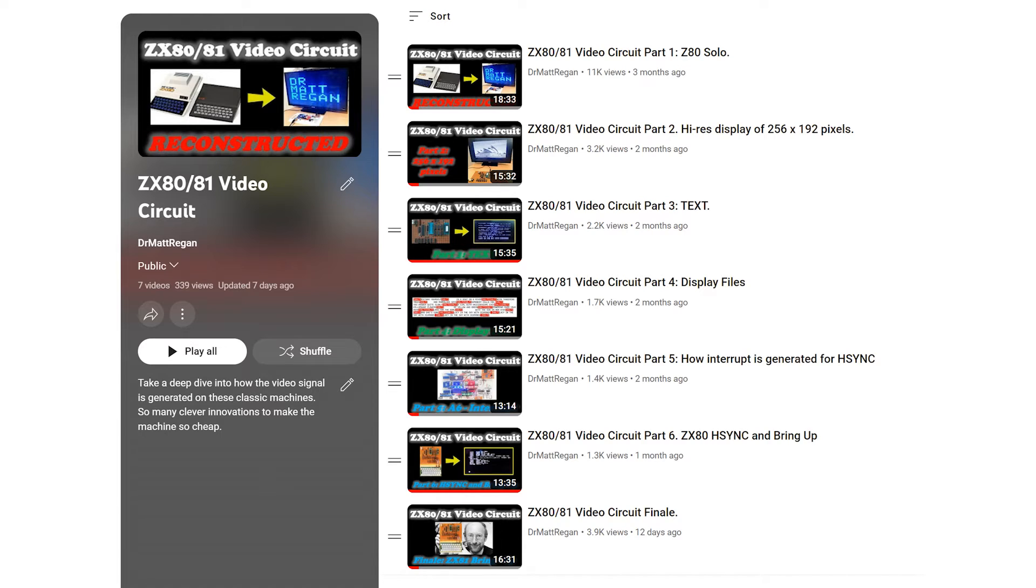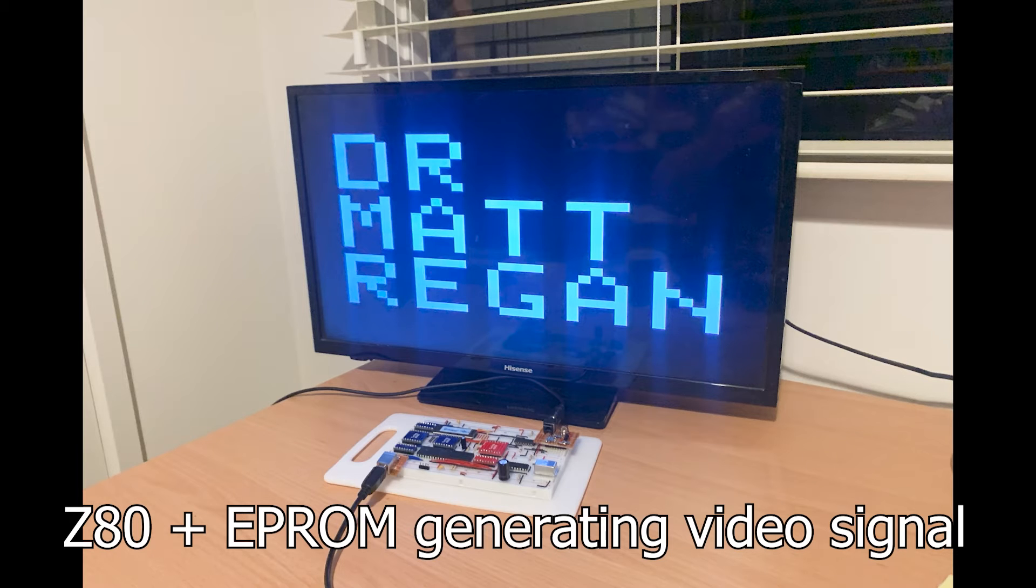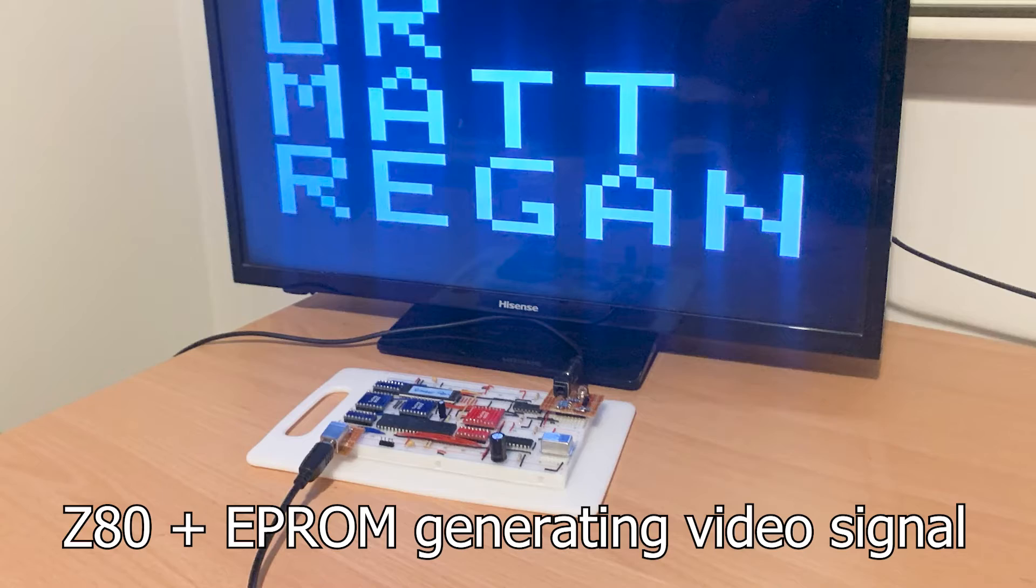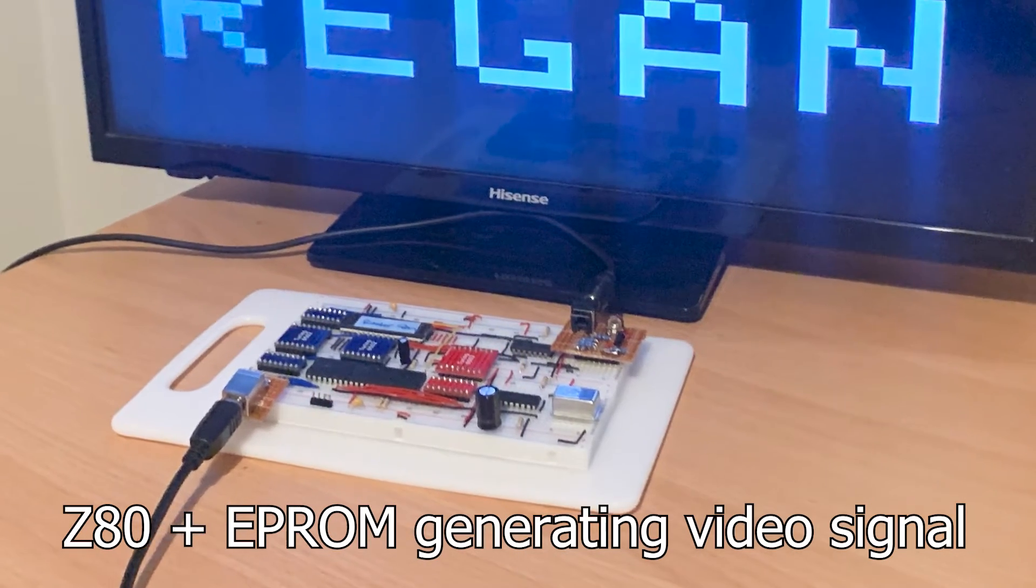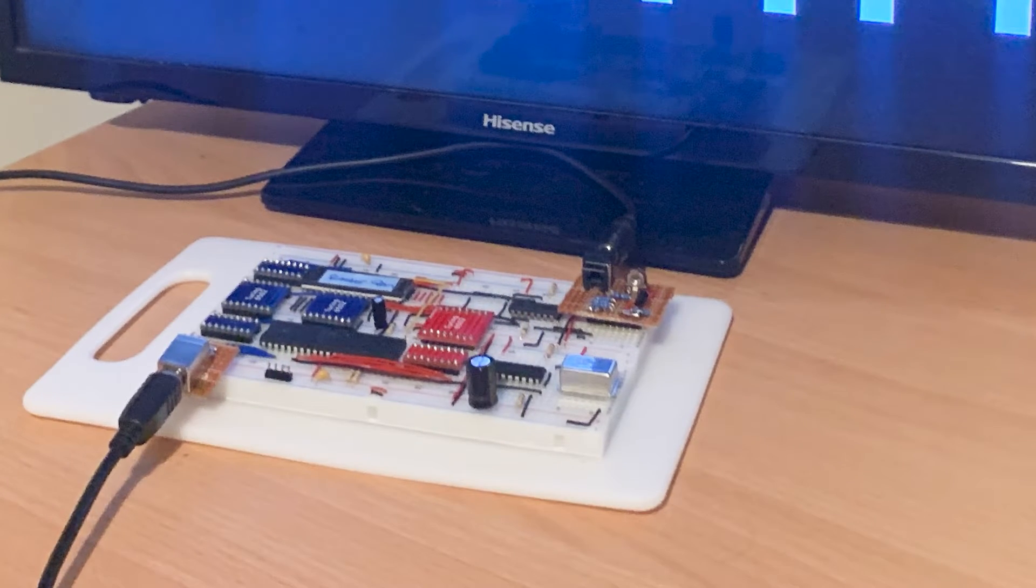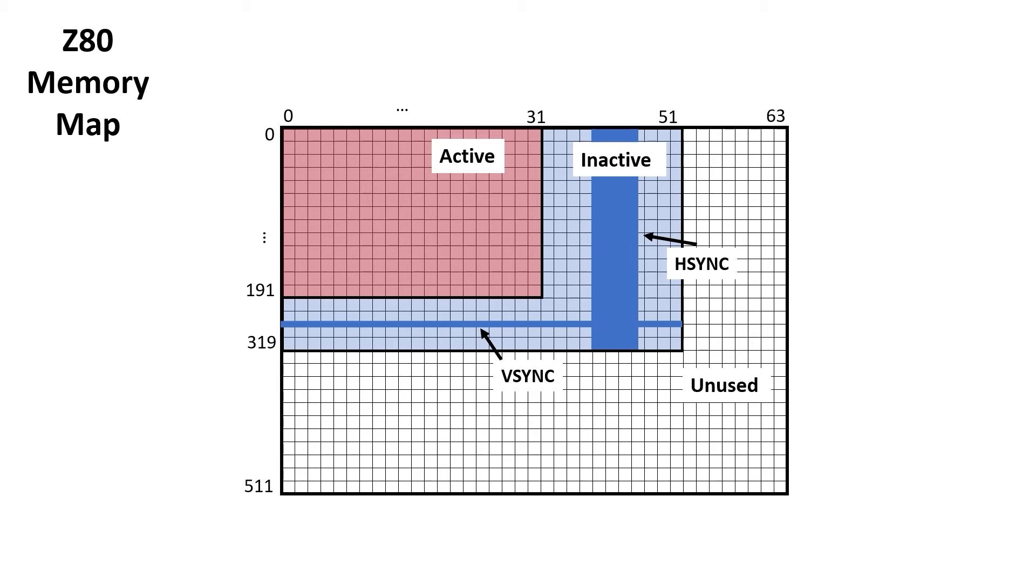To understand how the ZX80 and ZX81 RAM expansion works, we need to look at it in the context of the whole machine. Let's briefly recap how the ZX80 and ZX81 generate video. Remember that the timing for raster generation is under direct Z80 control. It generates horizontal sync and vertical sync, and these need to be cycle accurate.